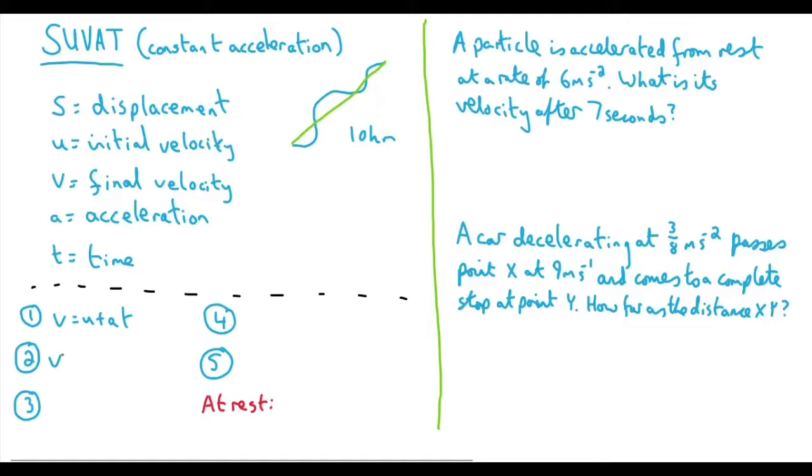Next, we can say that V squared equals U squared plus 2AS. So if the question involves, say, your final velocity, your acceleration and your displacement, but you want the initial velocity.